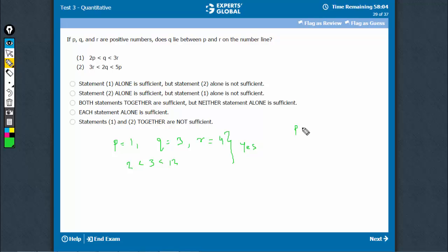But for values such as p equals 1, q equals 3, and r equals, say, 2, while this would satisfy this condition that 2p is 2, q is greater than this, and 3r is 6, q is 3 here. So yeah, while this would be satisfied, q will no longer be between 1 and 2. In this case, I will get no as an answer.